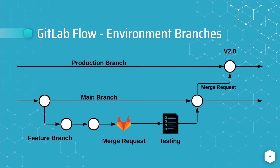Now let's explore the GitLab flow and its variations. The GitLab flow is simpler than the Git flow, but more structured than the GitHub flow. There are two variations of the GitLab flow. The first utilizes environment branches. In this workflow we have a long-lived production branch, which represents the production environment in which the software application is deployed. The code on the production branch should always be deployable.